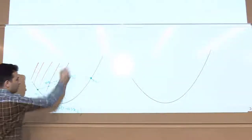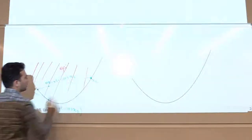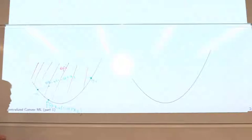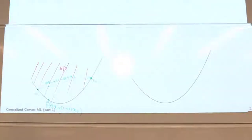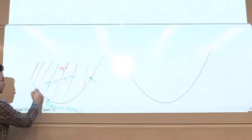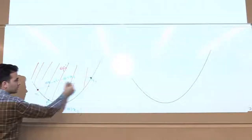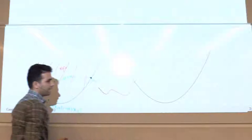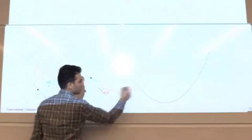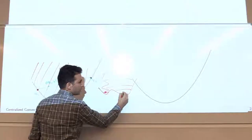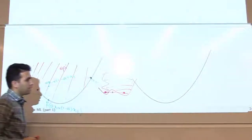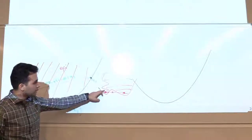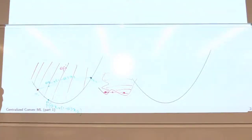Equivalently, instead of this definition, you can define the epigraph — all the points above this function. If the epigraph of the function is a convex set, then we can call the function convex. For a non-convex function, you can pick two points of that set and the intersection is not in the set — so the epigraph is not convex, and that's why we say the actual function is not convex.